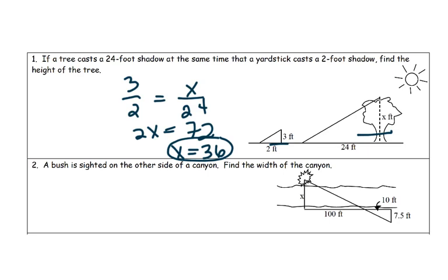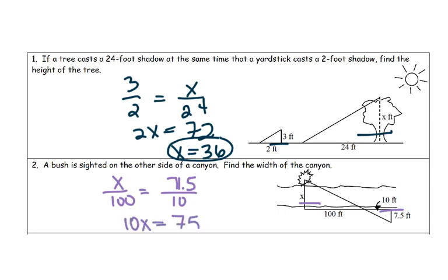A brush is sighted on the other side of a canyon. Find the width of the canyon. We're going to set it up. So we have one side over 100 equals 7.5, because 7.5 corresponds with x, and then 10, because we have to have similar parts across from each other. Cross product, we're going to get 10x equals 750. Divide by 10, and x will equal 75.